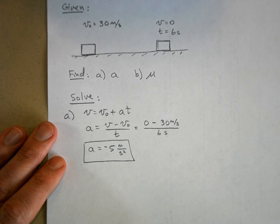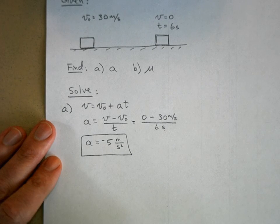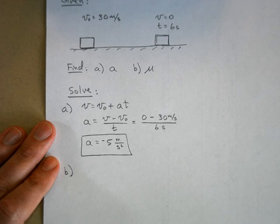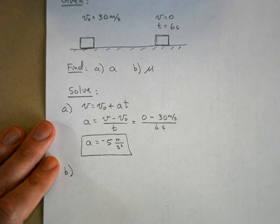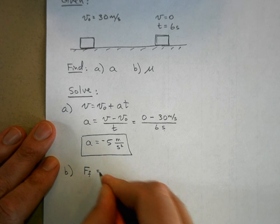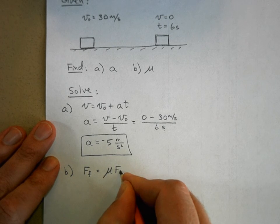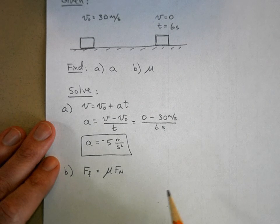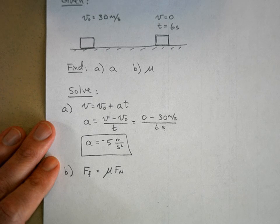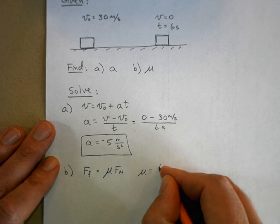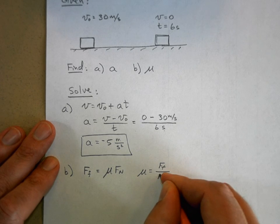Okay, now part b is going to take a little bit more work. We're trying to find mu, so try to start with what you're trying to find. We know that the force of friction is equal to mu times the normal force. So write that down when you're taking a test—just write it down even if you don't know where to go. Write it down because you're going to get partial credit for that. Now solve it for mu. So mu equals the force of friction divided by the normal force.